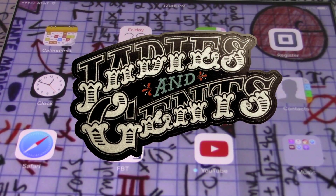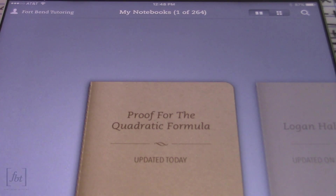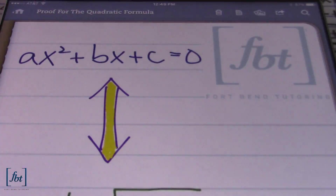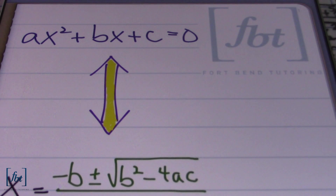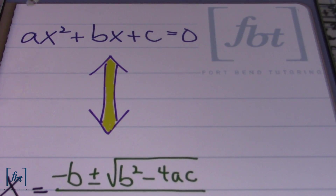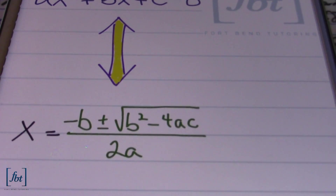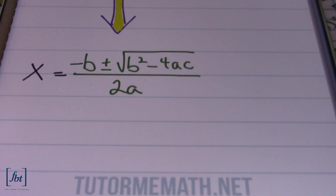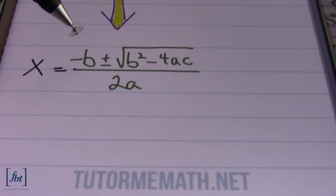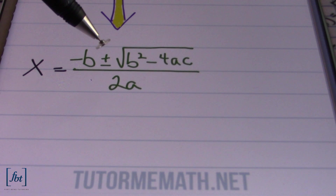Hello, ladies and gentlemen. This is Mr. Witt with Fort Bend Tutoring, FBT, and today's lesson is going to be about proving the quadratic formula. We're going to be learning how to take this equation — the standard form of a quadratic equation, ax squared plus bx plus c equals zero — into the quadratic formula: x equals negative b plus or minus the square root of b squared minus 4ac divided by 2a.